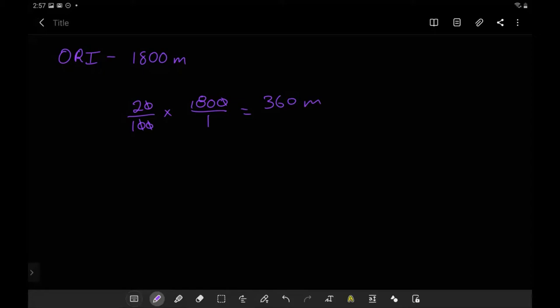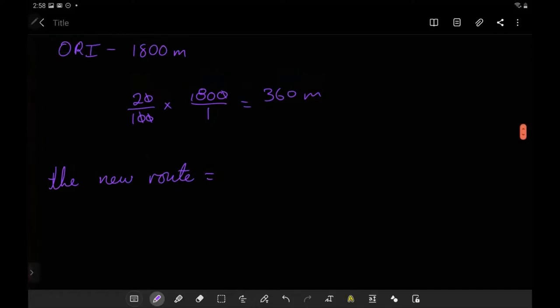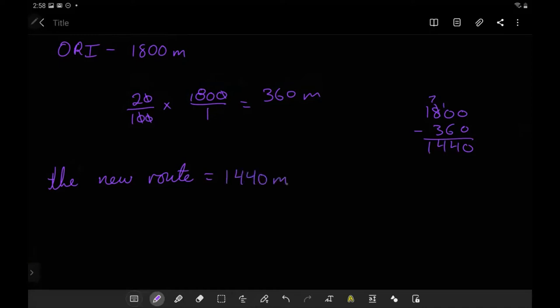Therefore the new route is equal to 1800 minus 360. Let me show you we can do that here. That gives us 1440 meters. So that was number one.